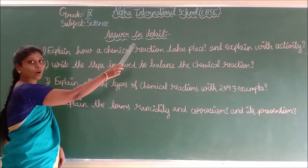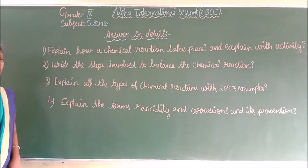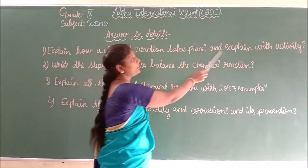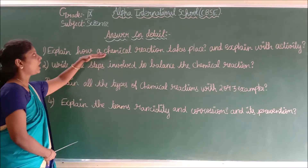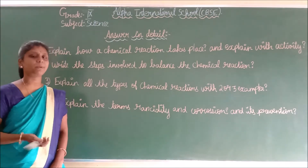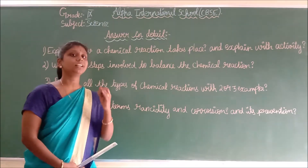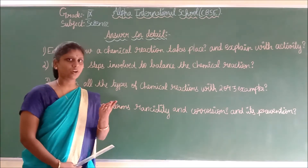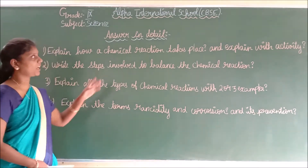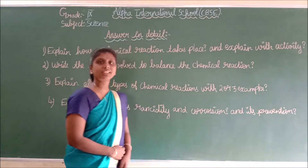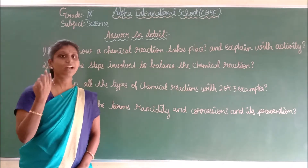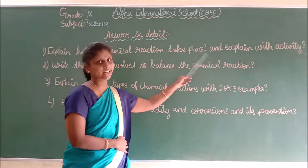Now we are going to discuss the detail answers for chemical reactions and equations. First, explain how a chemical reaction takes place with an activity. We have discussed: by change in state, change in color, increase in temperature, and evolution of gas. For all four, you should write examples. And you should explain the activities — activities 1.1, 1.2, and 1.3.